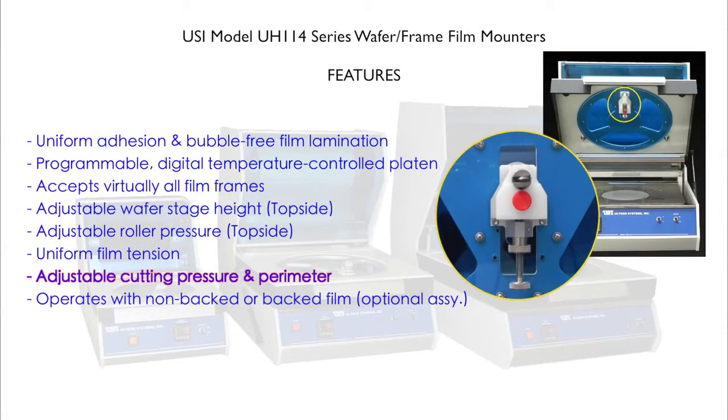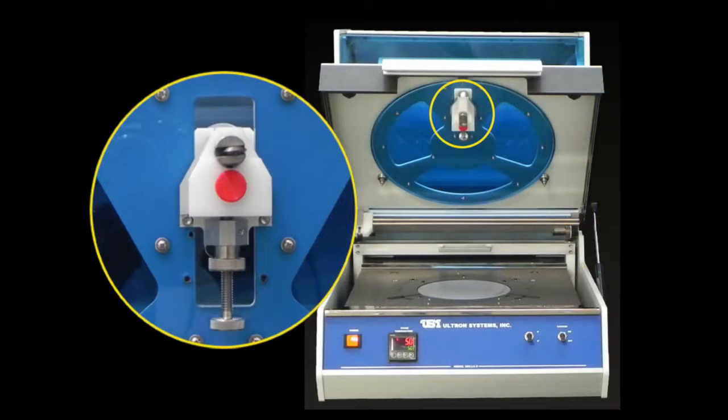Adjustable cutting pressure and perimeter. The wheel type circular cutter has a pressure adjustment to accommodate various tape-based materials and thicknesses. Additionally, the cutting can be fine-tuned a quarter of an inch for specific and precise alignment on the film frame.